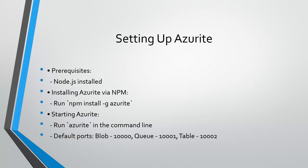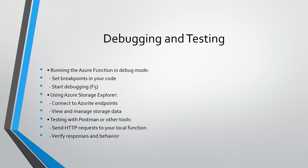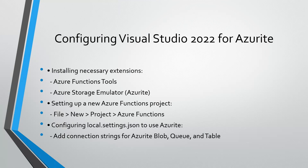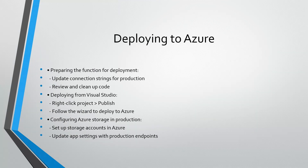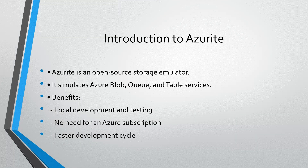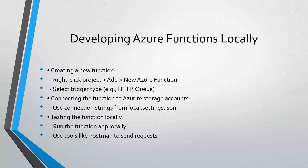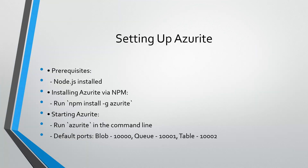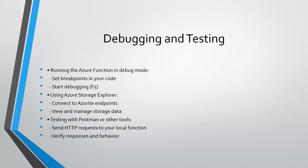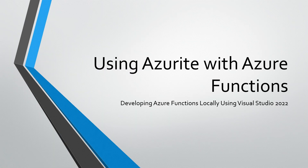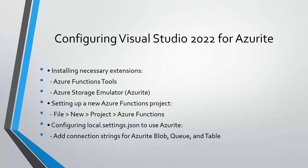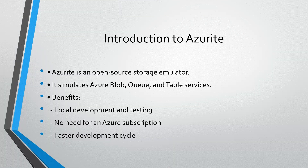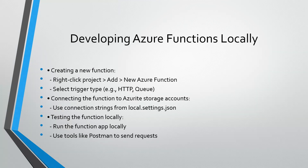When you have Visual Studio 2022, you don't need to worry about installation — it's already there. Whenever you create a new function, it will by default give you an option to select whether you want to use the Azure Storage Emulator or not. When you deploy, you just provide a connection string in the local.settings.json file, which allows you to use local storage.